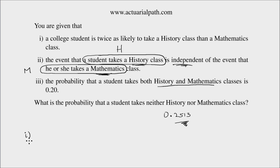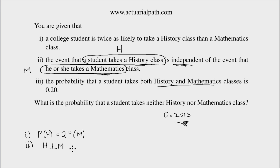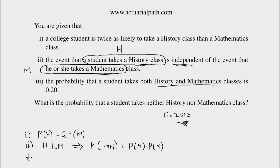Now, what do I have? Number one tells me that the likelihood of a student taking a history class is twice that of the likelihood of a student taking a mathematics class. Number two: the events H and M are independent. We know if two events are independent, the probability of the intersection H ∩ M is equal to the product of the probabilities, P(H) times P(M). Number three tells us that the probability of H ∩ M is equal to 0.20.